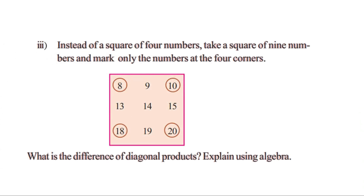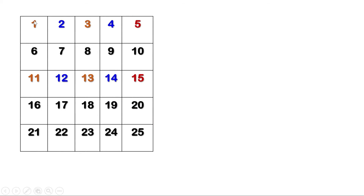Now let us take the third part of this problem. Instead of a square of four numbers, take a square of nine numbers and mark only the numbers at the four corners. What is the difference of diagonal products? Explain using algebra. Let us take a square of nine numbers: 1, 2, 3, 6, 7, 8, 11, 12, 13. Mark the numbers at the four corners: 1, 3, 11, and 13. Now let us find the diagonal products. 1 into 13 is 13. 11 into 3 is 33.